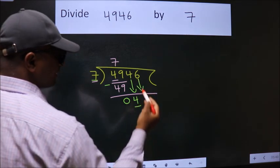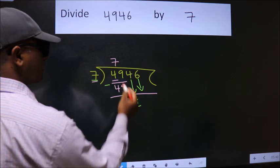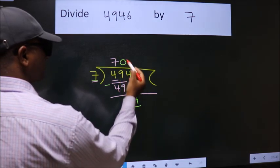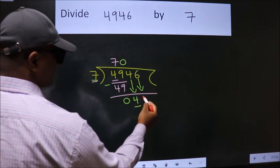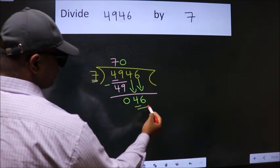And the rule to bring down the second number is to put 0 here. Then only we can bring down this number. So, 46.